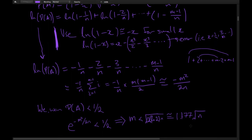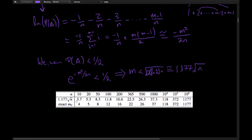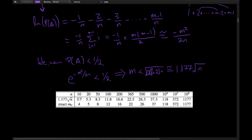Let's check the accuracy of this approximation using a table from the notes. It shows N (the hash table size), 1.177√N (our approximation), and the exact M₀ — the precise number of keys before collision probability exceeds 50%. As you can see, these values track each other closely, especially at higher orders of magnitude like 10⁵ and 10⁶, confirming we have a fairly good approximation.